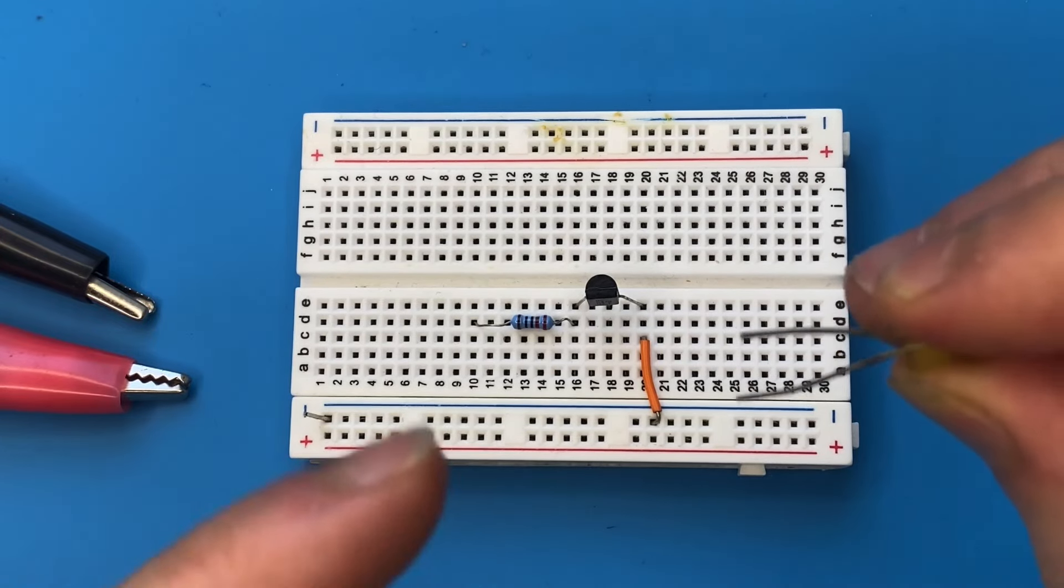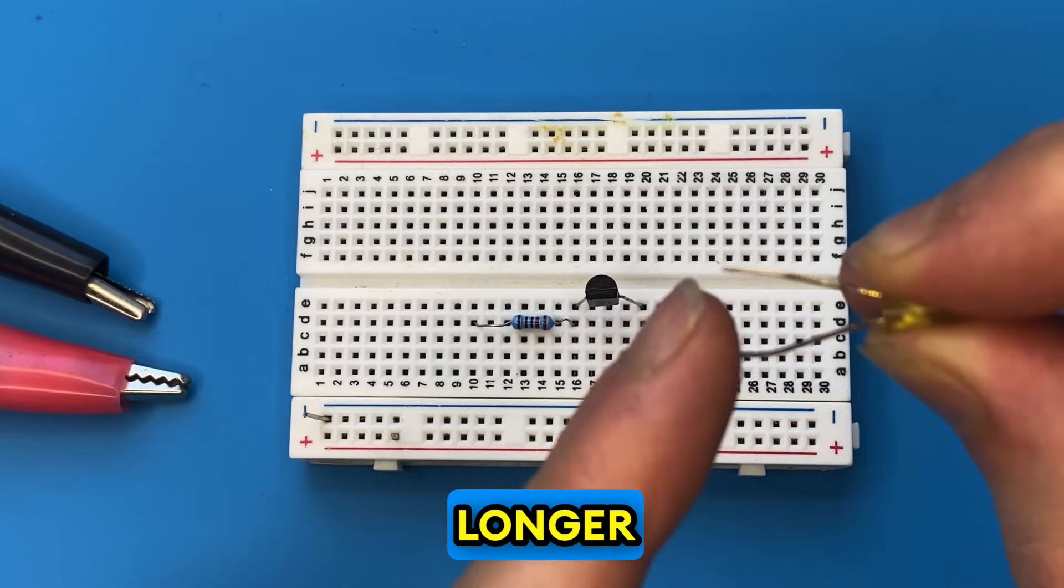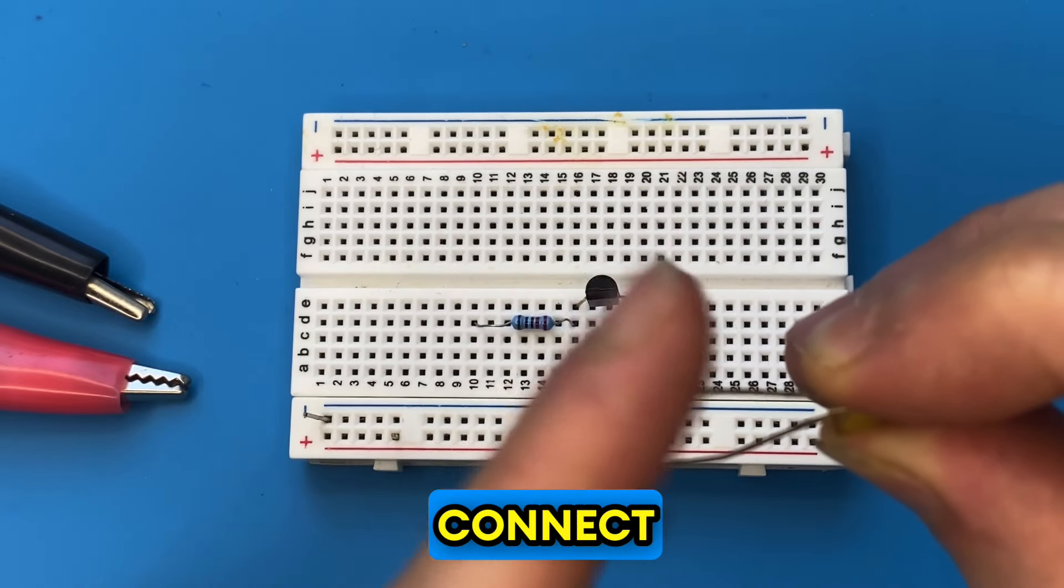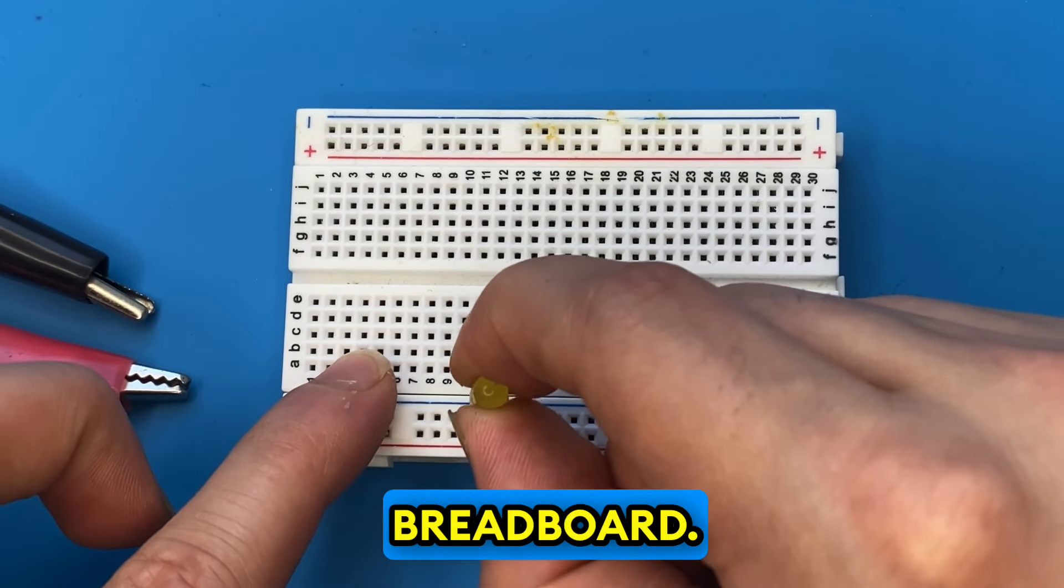Let's connect our LED with the cathode (the shorter lead) to the other end of the resistor, and the longer lead to the power rail of the breadboard.